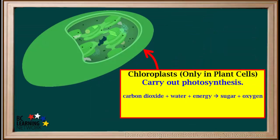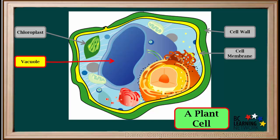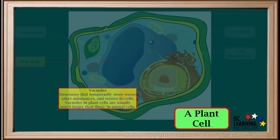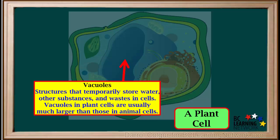Chloroplasts are found only in plant cells. In chloroplasts, the process of photosynthesis is carried out. Photosynthesis uses energy from the sun to convert carbon dioxide and water into sugar and oxygen. In this way, plant cells produce food. Vacuoles in plant cells are generally much larger than those in animal cells. Vacuoles are structures that temporarily store water, wastes, and other substances in cells.